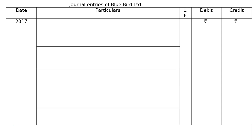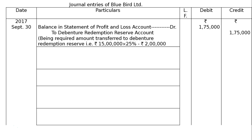The redemption date is 30th September 2017. The first entry is on September 30: balance in statement of profit and loss account debited to debenture redemption reserve account, being required amount transferred to debenture redemption reserve — i.e., Rs 15 lakh at the rate of 25% minus Rs 2 lakh, equals Rs 1 lakh 75,000.